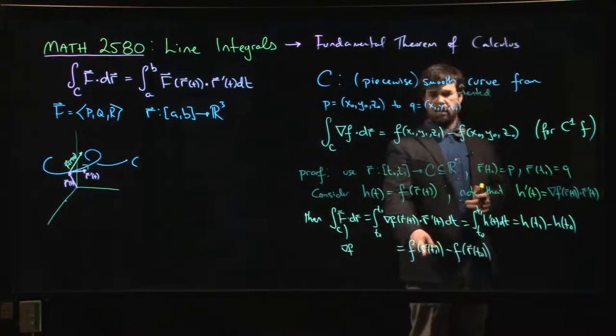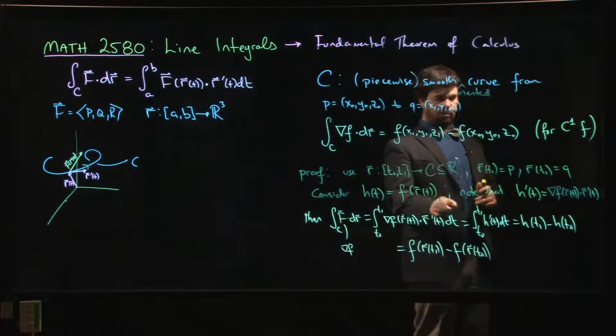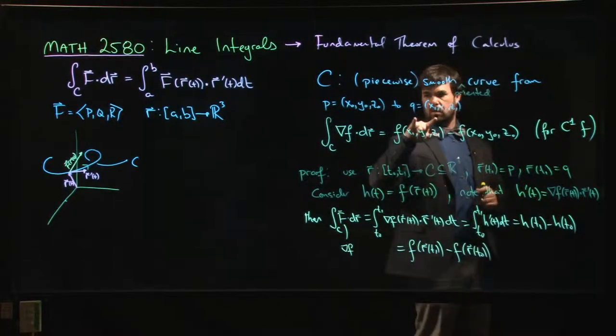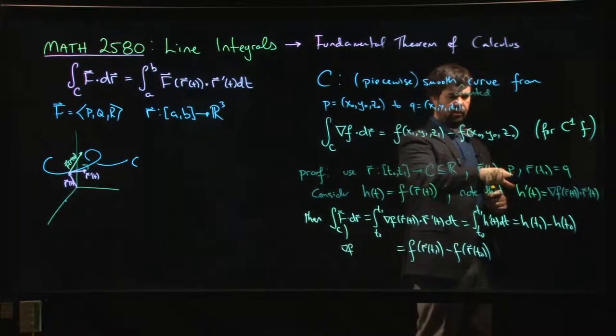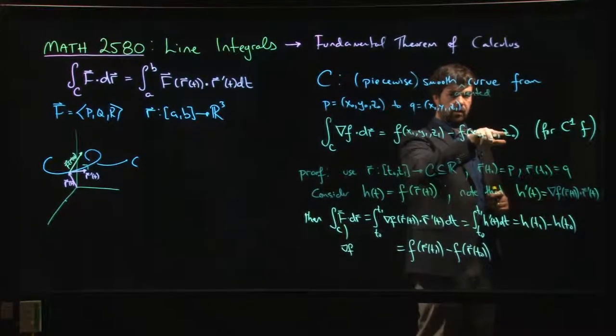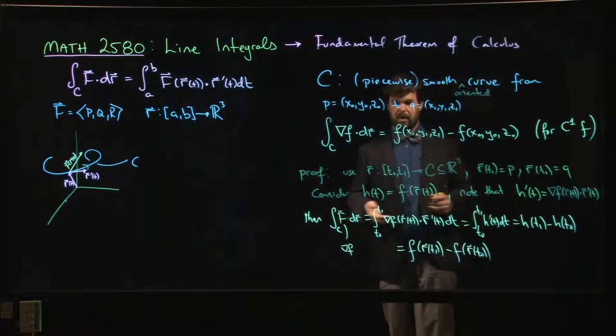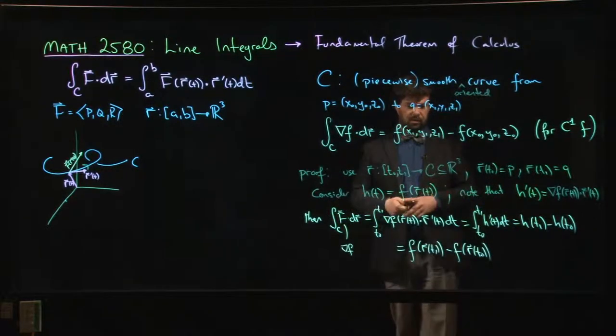And what's r at t1? Well, we're choosing our parameterization so that r at t1 gives us q, which is (x1, y1, z1), and r at t0 gives us p, which is (x0, y0, z0). So we have exactly what we want. This gives the fundamental theorem of calculus.